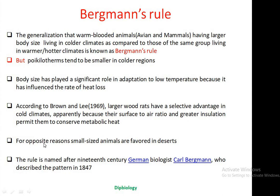Small size animals are favored in desert conditions because in the case of small size animals, their surface to volume ratio is high, and because of this high surface to volume ratio, they have a high rate of heat loss in extreme hot conditions. And this is the opportunity for small size animals staying in hot desert conditions.